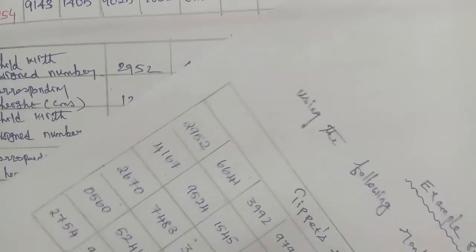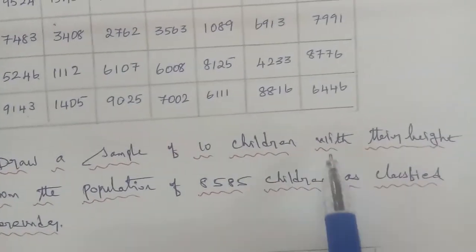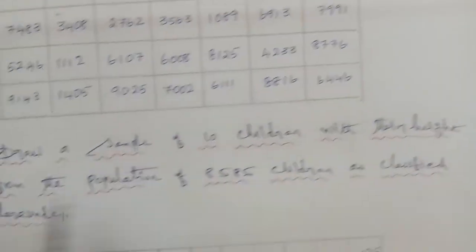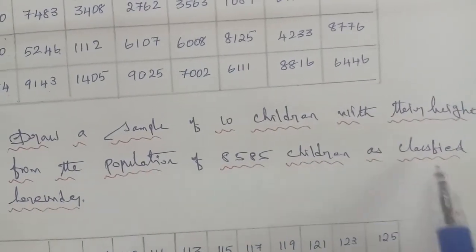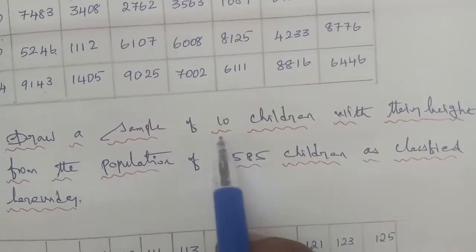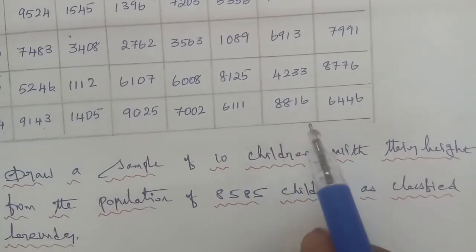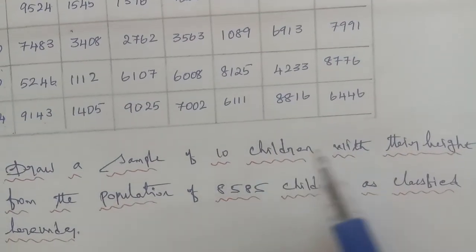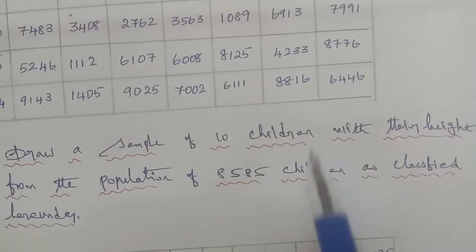Given question: draw a sample of 10 children with height from the population of 8585 children as classified. So 10 children are selected from the population of 8585 using the random number table.